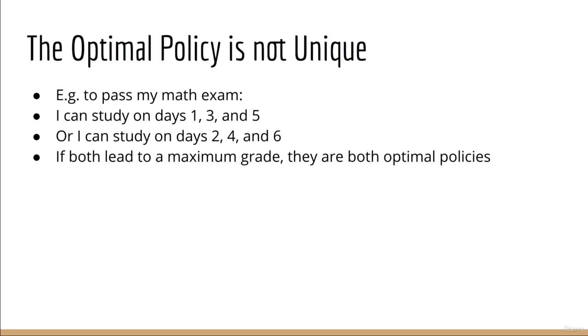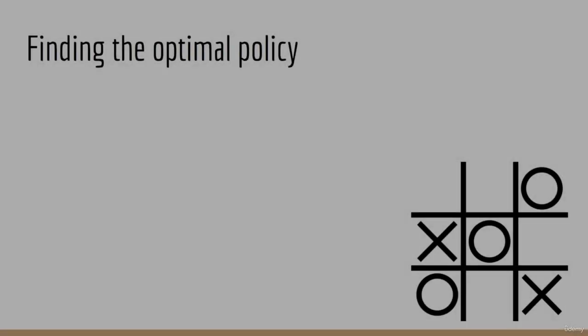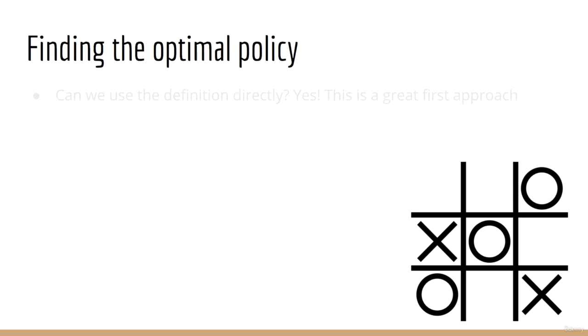As a side note, notice how the optimal policy is not unique. It could be that multiple different policies lead to the same best value function. In this case, it suffices to find just one of them. On the other hand, the optimal value function is unique, because if there are two different value functions, then logically one of them must be greater than the other one.